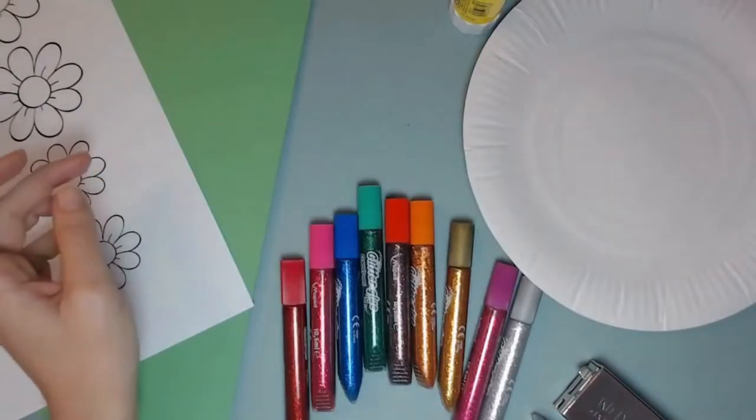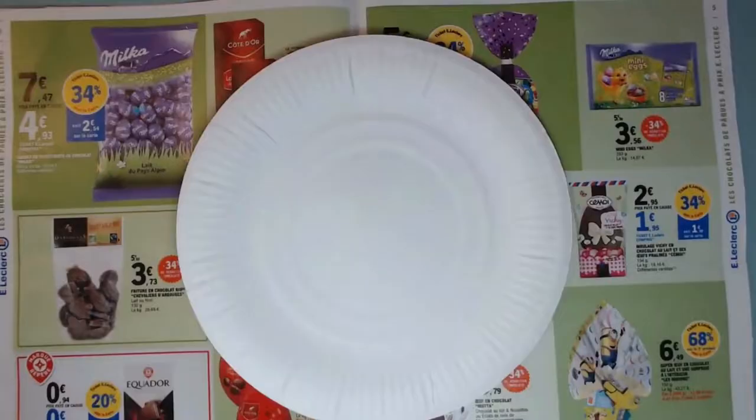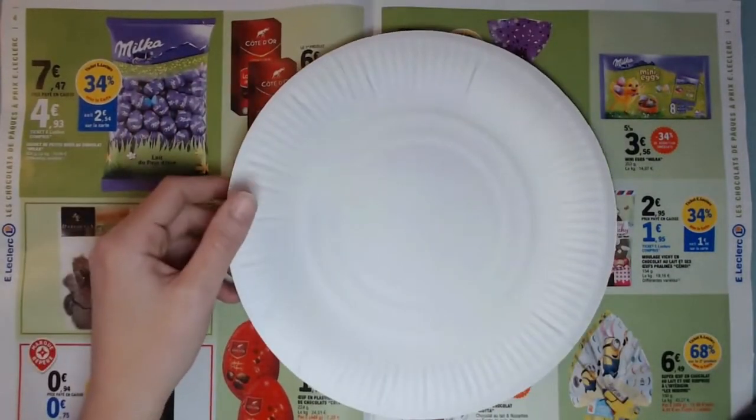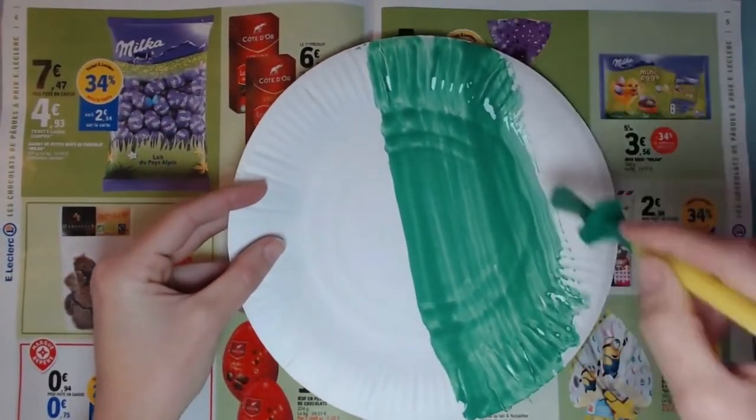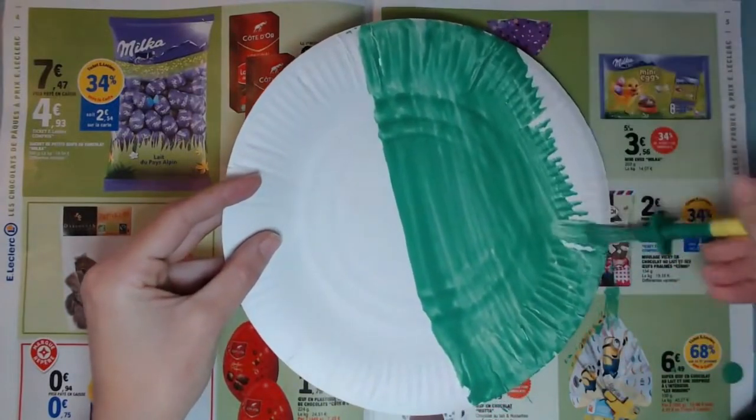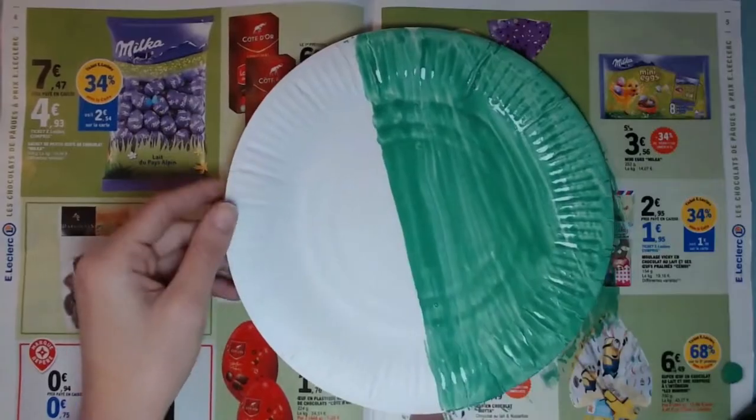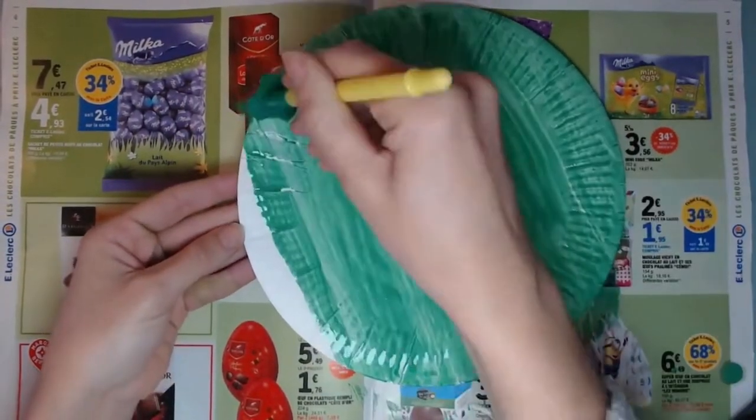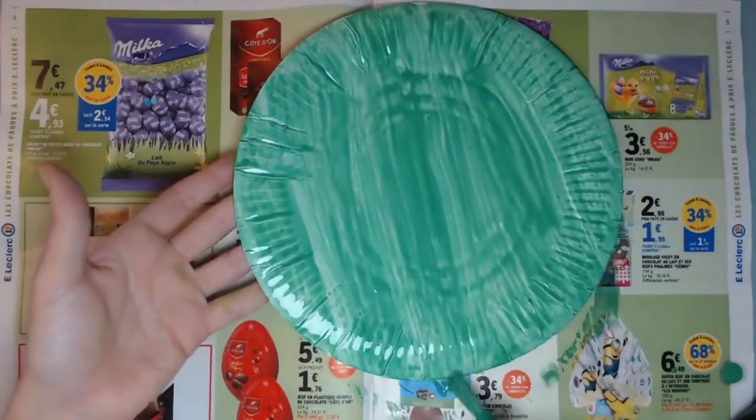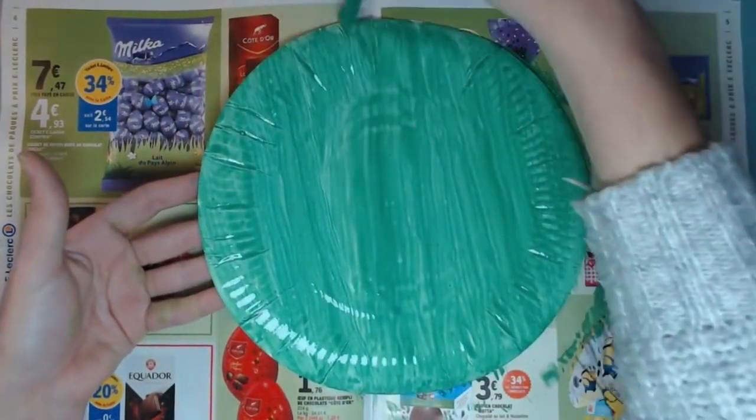Let's get started. First put some newspaper on your table and now we're going to paint your paper plate. Use long brushstrokes and make sure that all the white spaces are painted. This may take some time so you can pause the video. It's looking great so far. Nearly done. Great. Okay, leave it to dry.